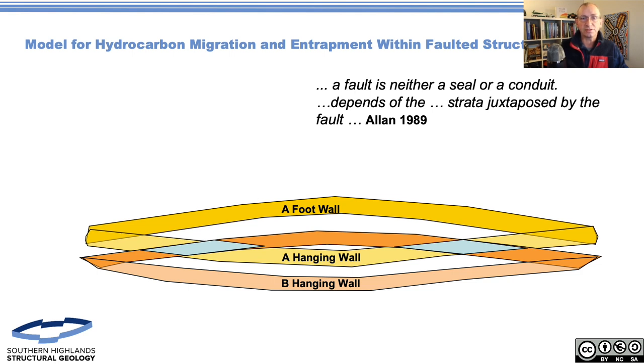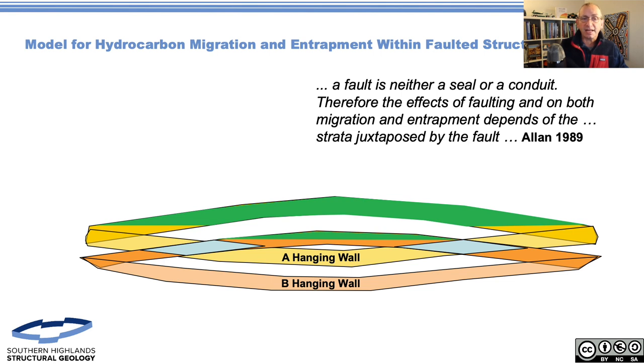When we look at what Allan says in his abstract - I'm slightly abridging this - 'a fault is neither seal nor conduit and depends on the strata juxtaposed by the fault.' What we can see are those blue diamonds - areas of juxtaposition of A and B. If we think about where our hydrocarbons would be, Allan would suggest we can end up with a reasonably large column in the A in the footwall because it's only defined by self-juxtaposition, and a much smaller column in B because of juxtaposition with A in the hangwall.